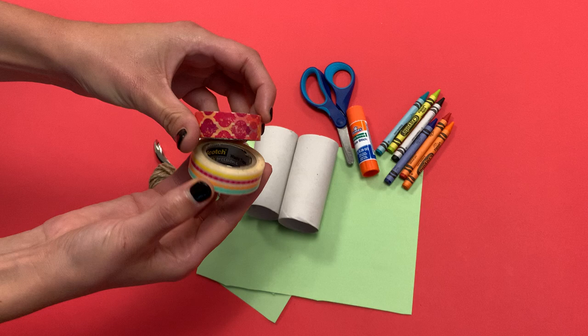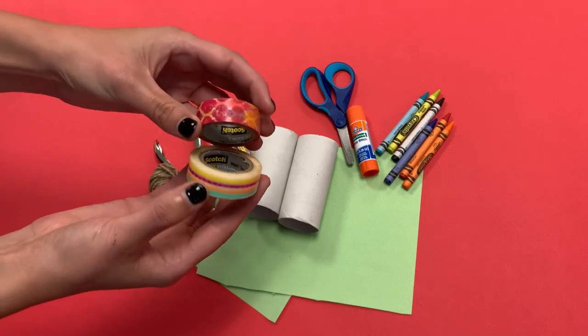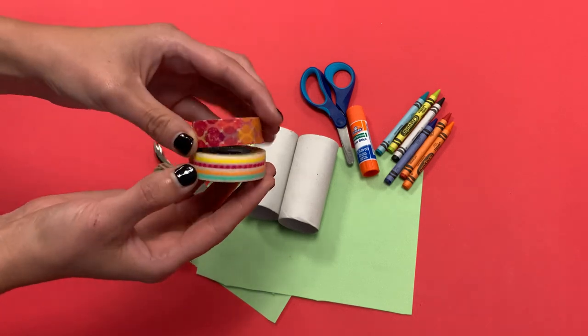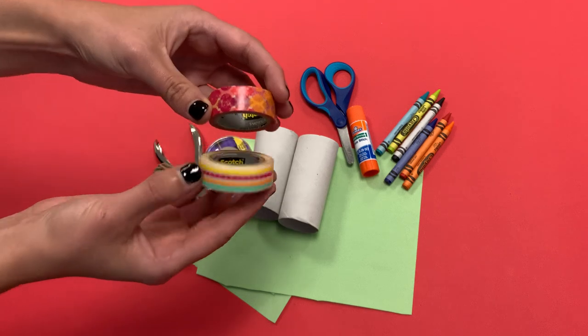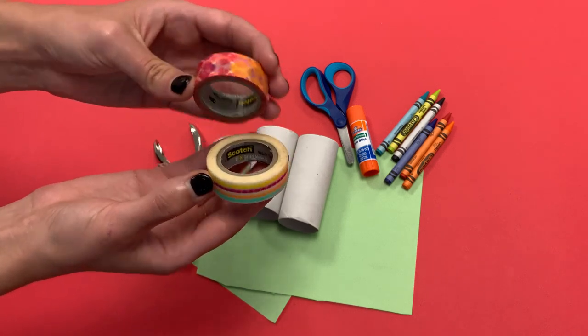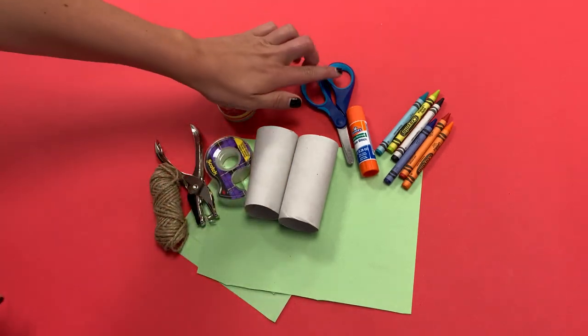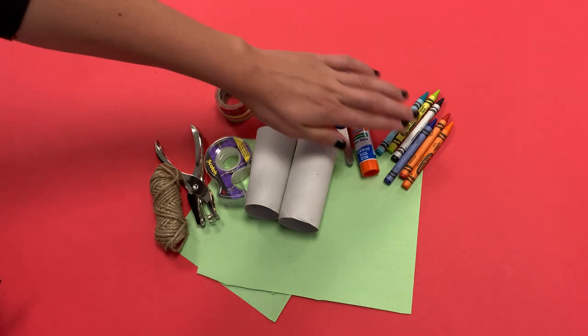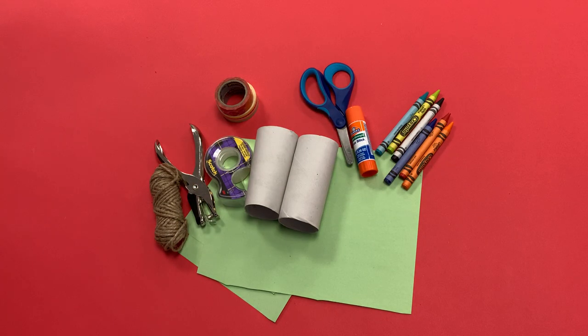You'll need some washi tape. This is really fun tape that you can get from a craft store. It's not super sticky. It's more for decorative purposes. You can find it in the paper section or you can always buy it online. You'll need some scissors, a glue stick, and something to color and decorate your binoculars with. I went ahead and chose crayons. If you're working with younger kiddos you can always use stickers and glitter. Those are really surefire ways to get the children to use those materials and explore.